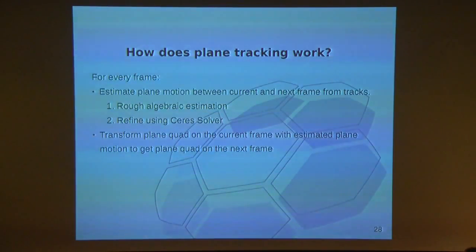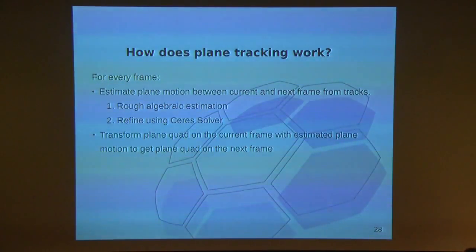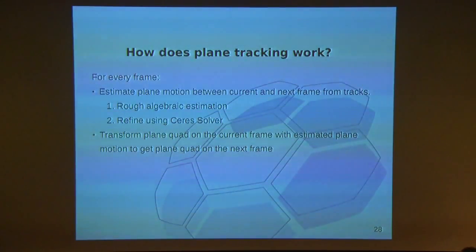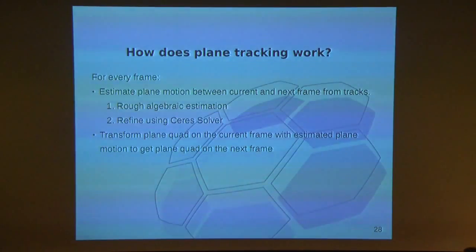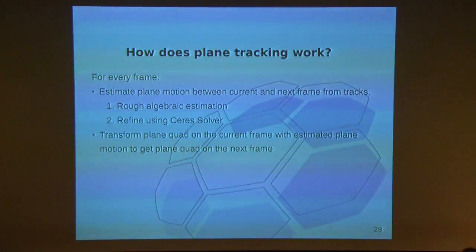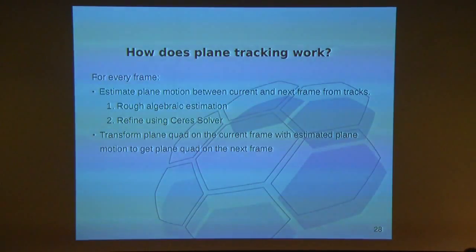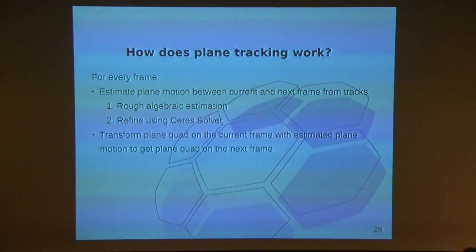How does it work? For each frame pair, we estimate a homography. The way it works is we do a rough algebraic estimation, which is a closed-form solution — easy to get but not very accurate. So we refine it with a thing called the Ceres Solver, which is integrated in Blender. It takes a guess that's not quite perfect and tweaks the transformation so that it better matches the tracks in the scene. The plane quad, which is what you interact with on the canvas, is warped to match this transformation.